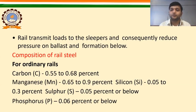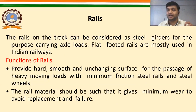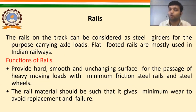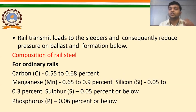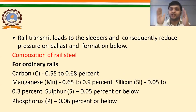To summarize what we have covered so far: the basic definition of rail is that it is a steel girder for the purpose of carrying the axle load. The functions of rail are: to provide a hard, smooth, and unchanging surface for passage of heavy moving loads; the rail material should have minimum wear and tear; and rail transmits the load to the sleeper and consequently reduces the pressure on ballast and formation below.